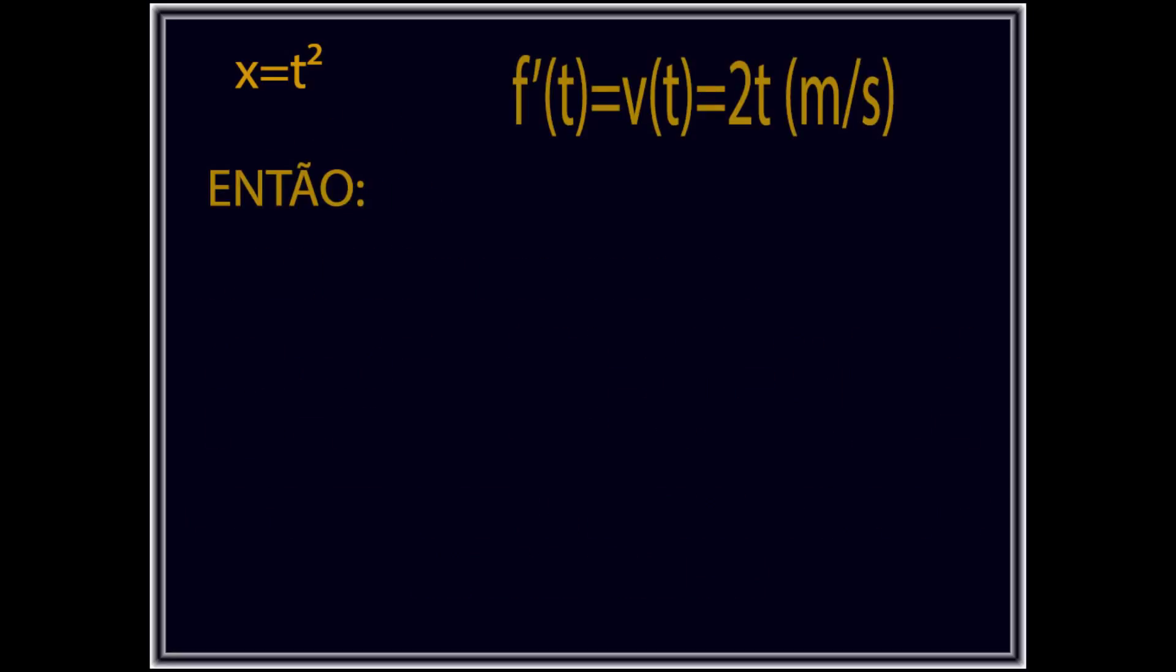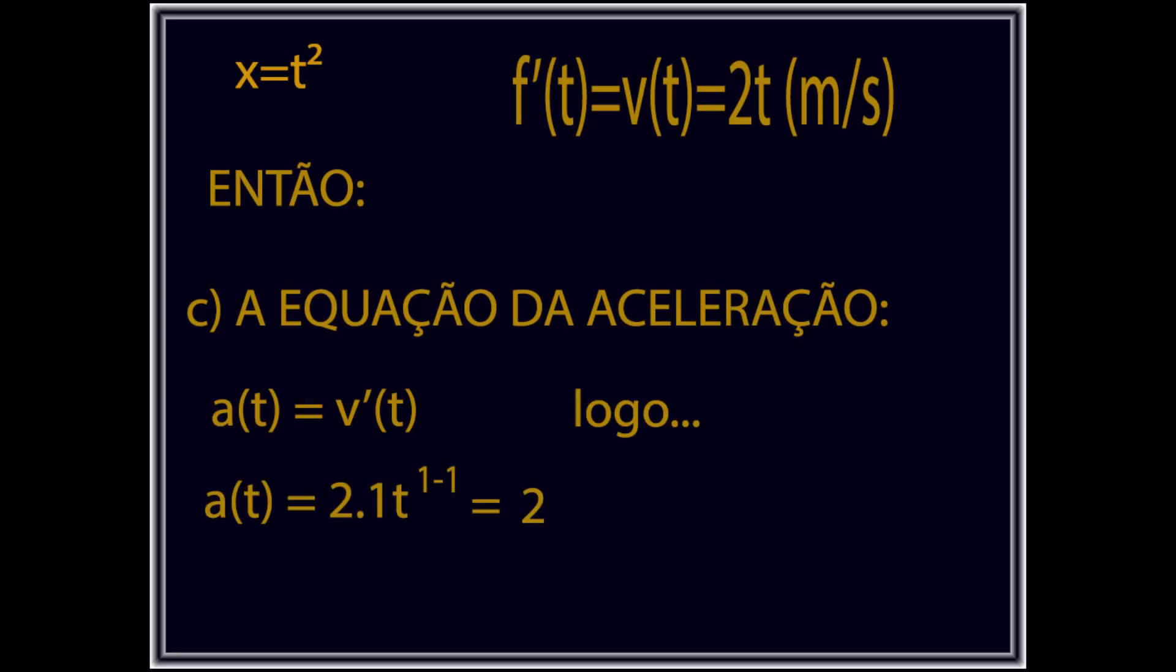Portanto, no subíndice C, encontraremos a equação da aceleração utilizando a mesma regra do tombo, da qual a derivada da velocidade em função do tempo é igual a aceleração em função do tempo.